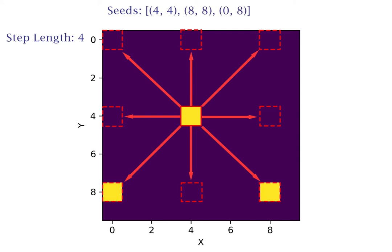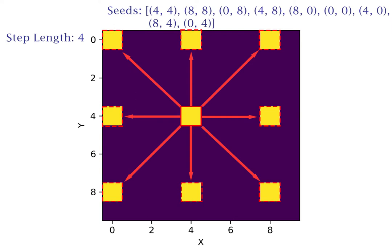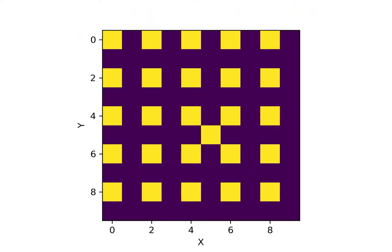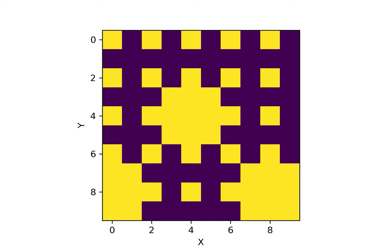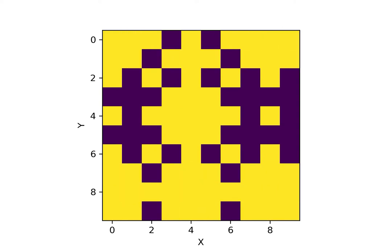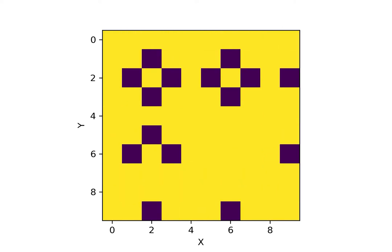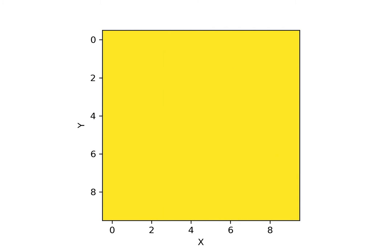Either way, every point that is flooded by a seed point's data becomes a seed point itself and is added to the list of seeds to be iterated through in the next round. This continues until the step length is either less than one if you are halving after each round, or at least half the dimensions of the grid if you are doubling.